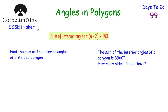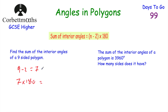So let's have a look at some questions using that formula. Feel free to pause and try yourself. The question says: find the sum of the interior angles of a 9-sided polygon. So we do 9 take away 2, which equals 7, then 7 multiplied by 180 degrees, which equals 1260 degrees. So the angles inside a 9-sided polygon add together to be 1260 degrees.